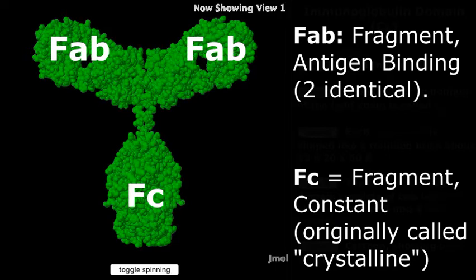While the FAB arms bind to the antigen, the FC arm binds to receptors on the membranes of defense cells such as macrophages. When antibody binds to bacteria, the FC end signals the macrophages to attack and kill the bacteria.